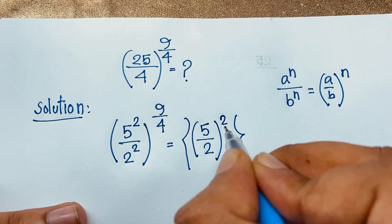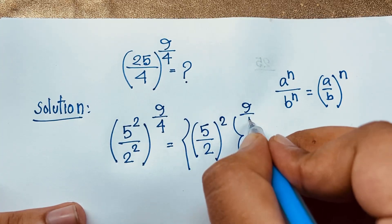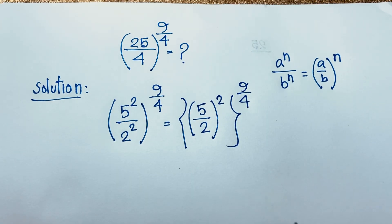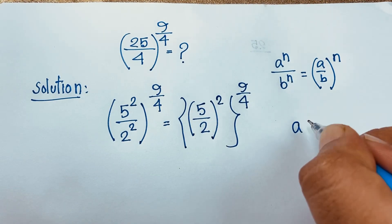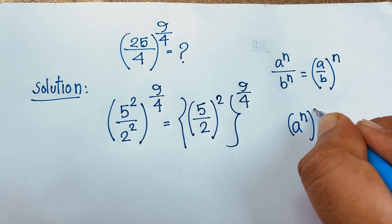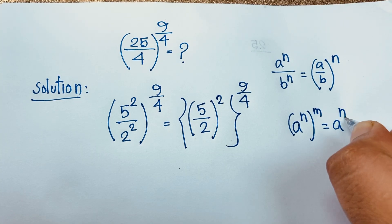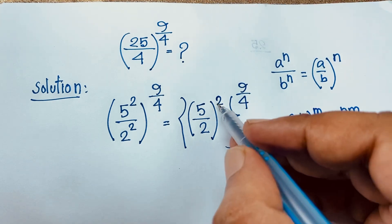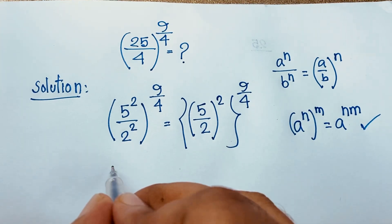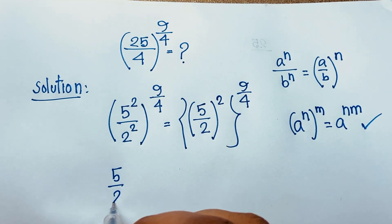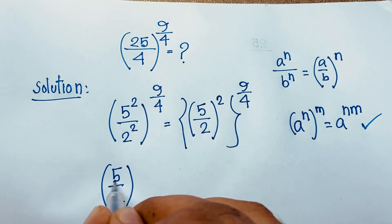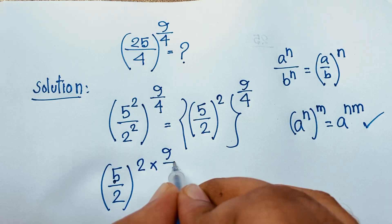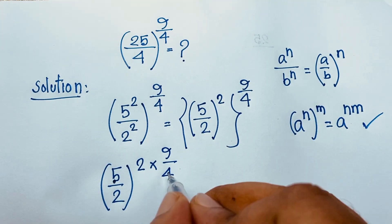We now apply the exponential law: (a to the power n) whole to the power m equals a to the power n times m. Applying this, we get (5 over 2) to the power 2 times 9 over 4. The 4 divides the 2, giving us (5 over 2) to the power 9 over 2.